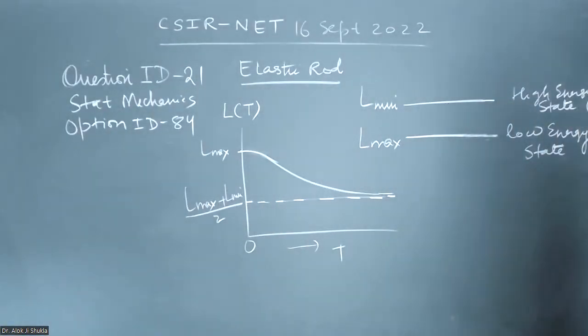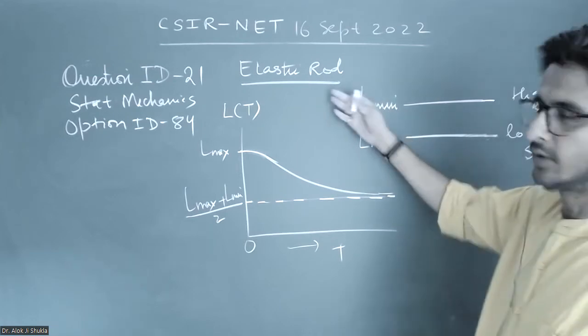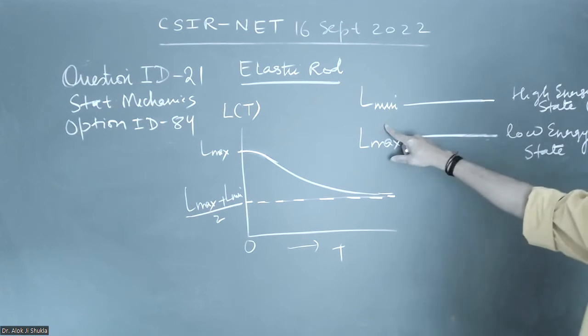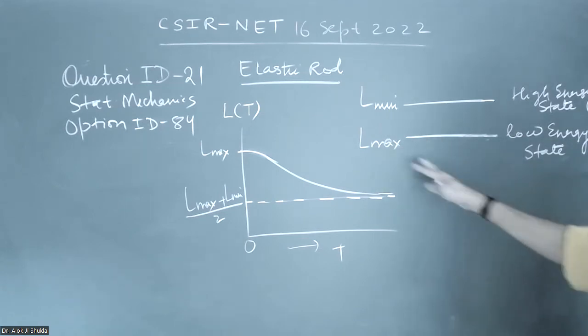This is a question in which an elastic rod is given, and they are saying that at low energy state it is L max and at high energy state it is L min. So kind of opposite.